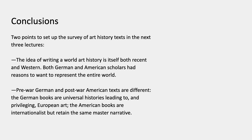Second, pre-war German and post-war American texts are different. The German books are universal histories — they start wherever they start, including all the way back at plankton — but those opening chapters are a small part, and the majority of the text is European art, the European Christian tradition. The American books, by contrast, are internationalist — American, UK, Australian, and other Anglophone books produced after the Second World War — but they have at their core that same master narrative, which at that point had never been critiqued.